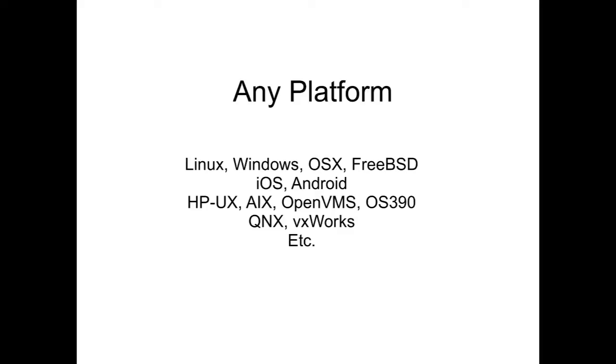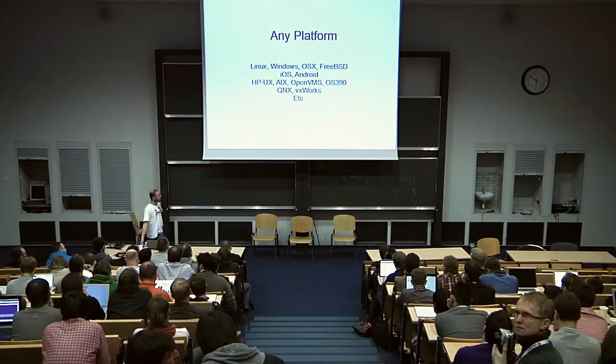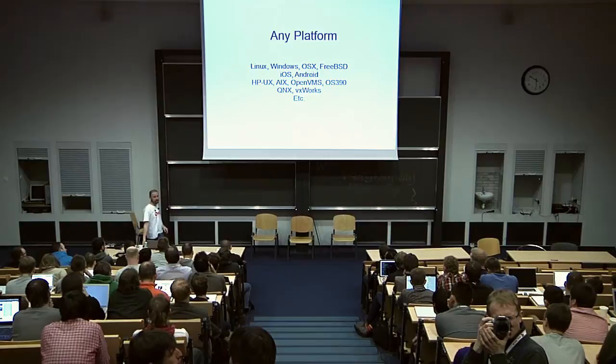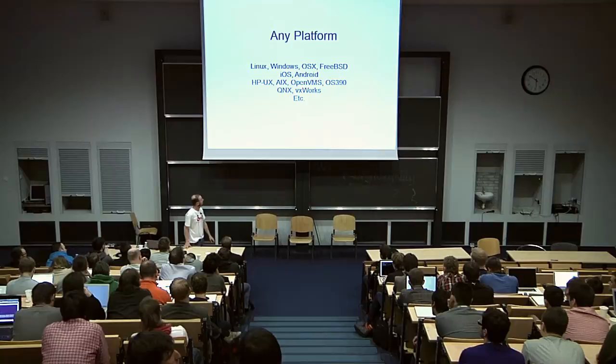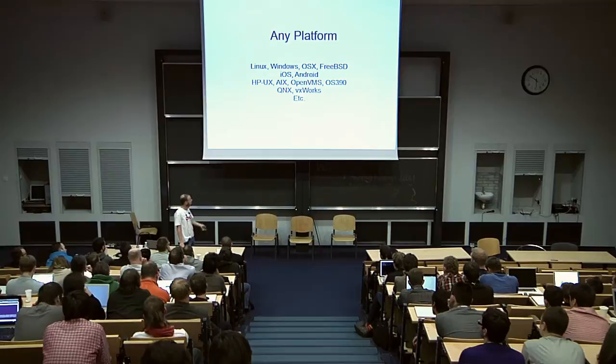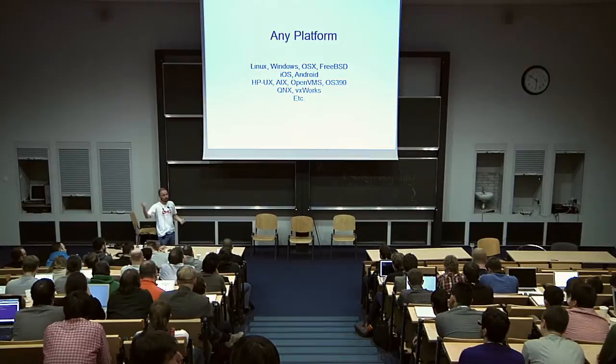ZeroMQ is a library written in C, so it's pretty much portable. It runs on standard operating systems like Linux, Windows, OS X, FreeBSD and other BSD flavors. It runs on mobile operating systems — iOS and Android, though that's not easy to build. It also runs on legacy systems for banks: AIX, HP-UX, OpenVMS, mainframes, OS/390. ZeroMQ runs on all of these. People have also used it under QNX and VxWorks for embedded systems, so it can be used as glue between mobile applications, server-side, mainframe, and so on.